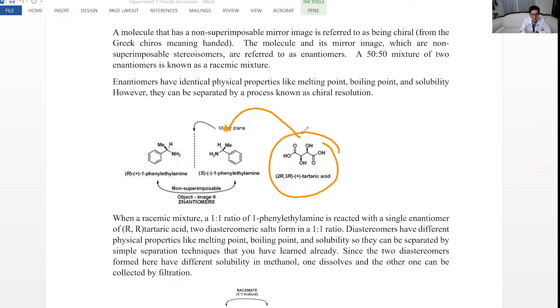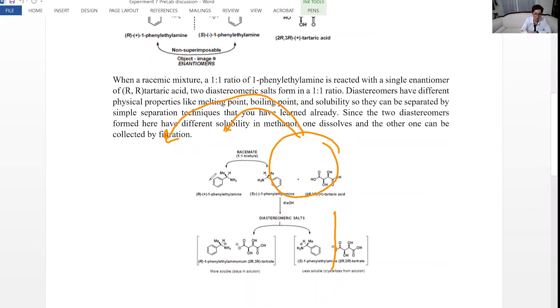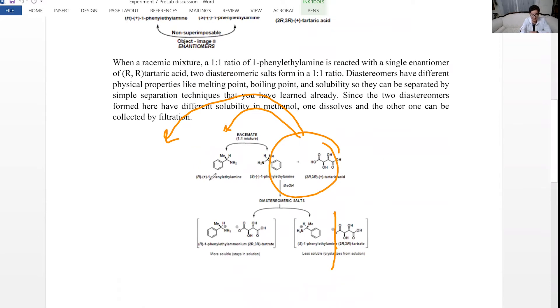If it reacts with one of the mirror images and the other mirror image, it's going to give us two products. So we have tartaric acid reacting with R and S of this amine, and it's going to give us two products. The two products, with respect to each other, they are not mirror images anymore. And since they are not mirror images anymore, they are known as diastereomers.